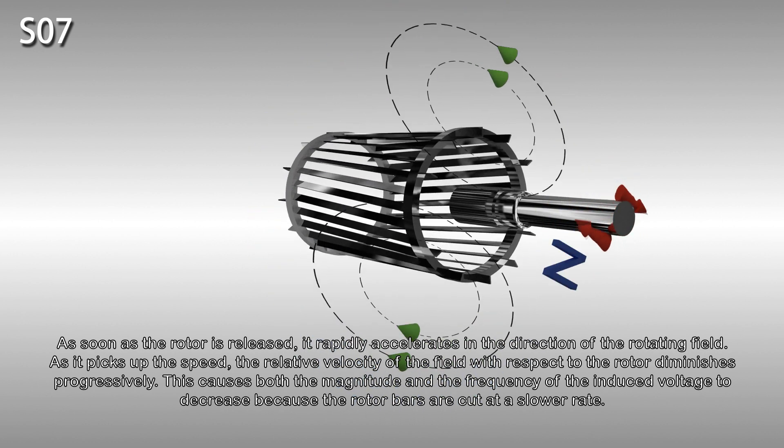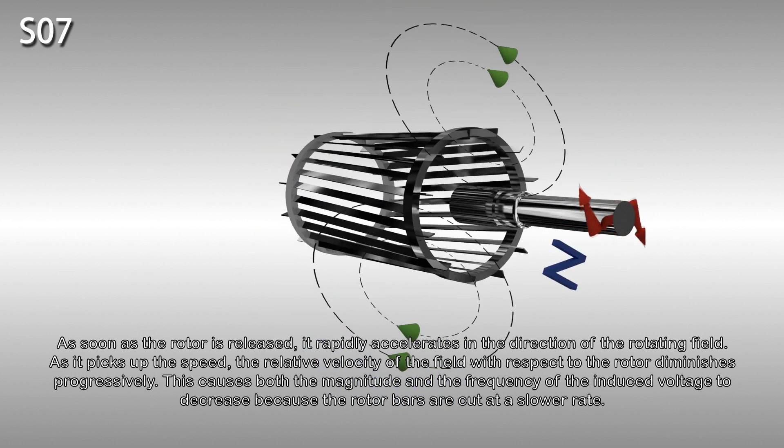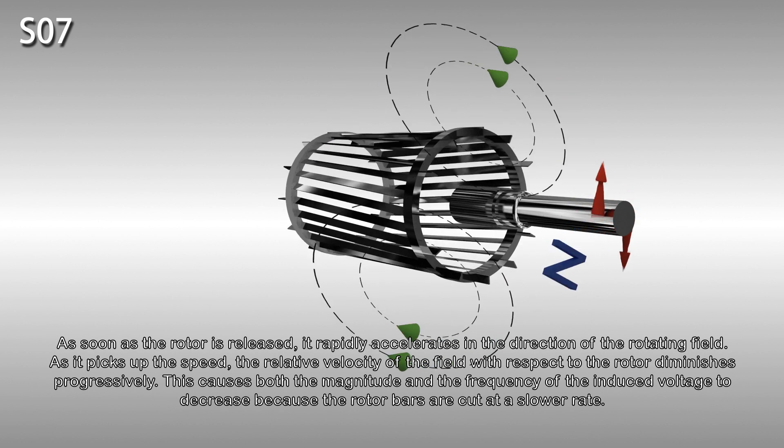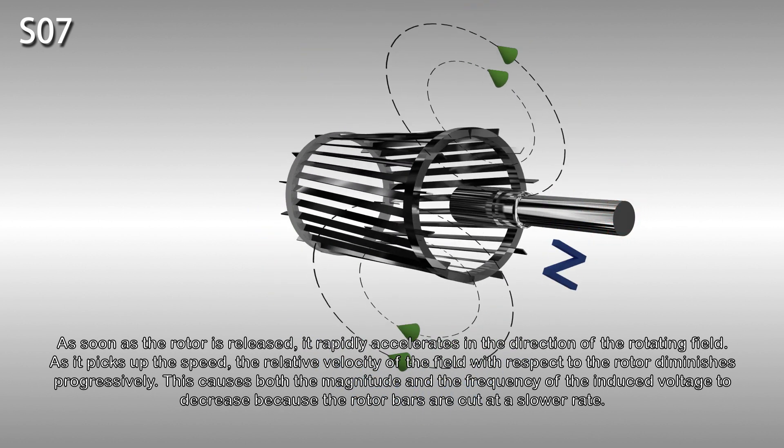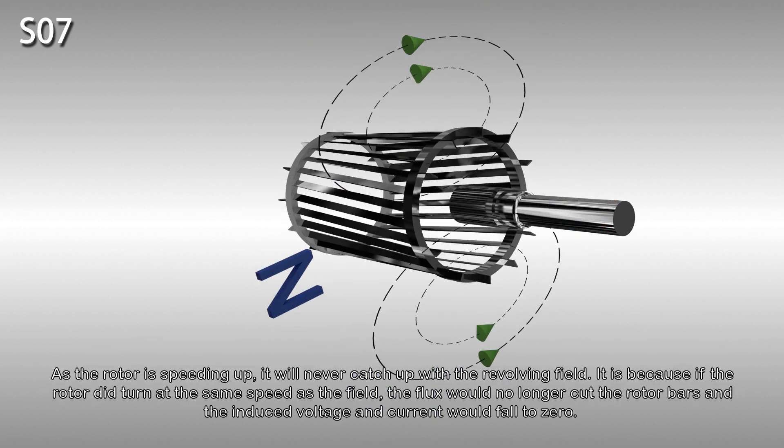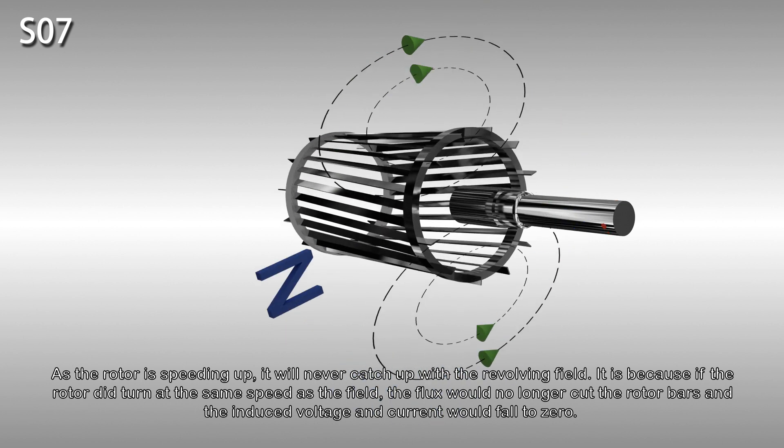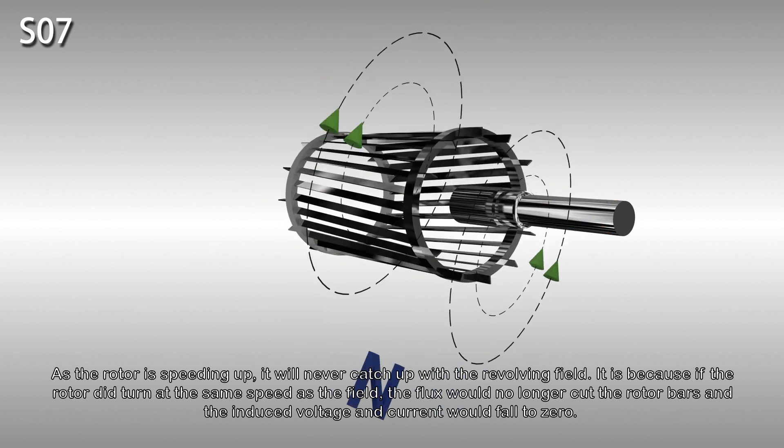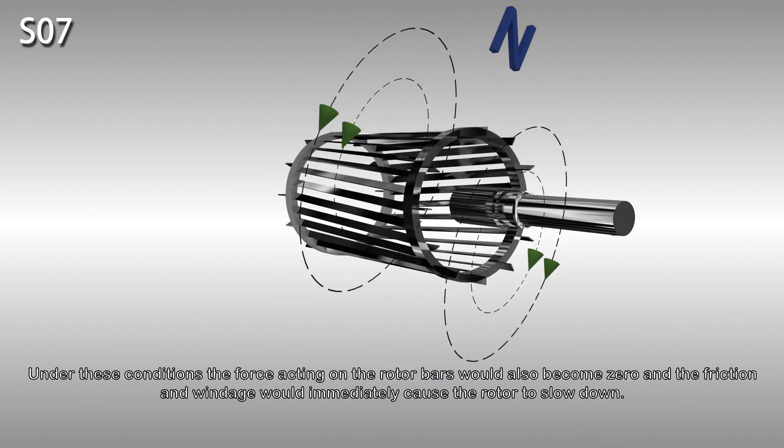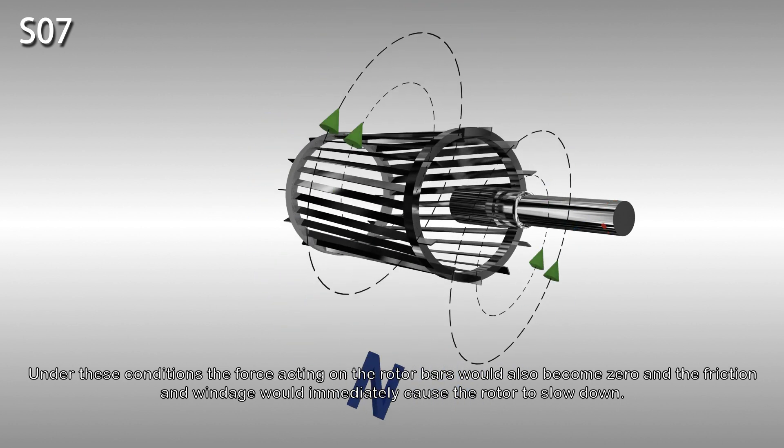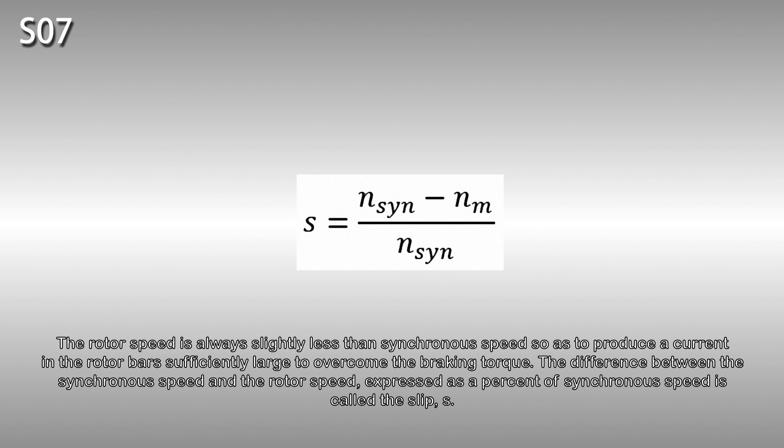As it picks up speed, the relative velocity of the field with respect to the rotor diminishes progressively. This causes both the magnitude and the frequency of the induced voltage to decrease because the rotor bars are cut at a slower rate. As the rotor speeds up, it never manages to catch up with the revolving field. If the rotor did turn at the same speed as the field, the flux would no longer cut the rotor bars and the induced voltage and current would fall to zero. Under these conditions, the force acting on the rotor bars would also become zero and friction and windage would immediately cause the rotor to slow down. The rotor speed is always slightly less than the synchronous speed in order to produce a current in the rotor bars sufficiently large enough to overcome the braking torque. The difference between the synchronous speed and the rotor speed, expressed as a percentage of synchronous speed, is called the slip S.